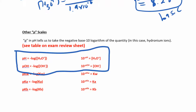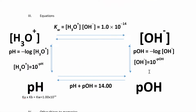On the exam review sheet, there's something really going to help us. If you know hydronium, you can get to pH because pH is just negative log of hydronium. Or if you know pH, 10 to the negative pH gives you hydronium. Same thing with pOH and hydroxide: negative log of hydroxide gives you pOH, and 10 to the negative pOH gives you hydroxide. pH plus pOH equals 14, and Kw = 1 × 10⁻¹⁴ equals hydronium times hydroxide. So if you know one of these things, you can figure out all of them using this table.